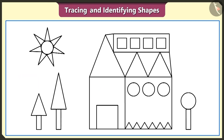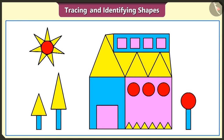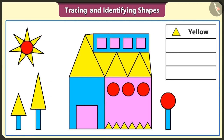Let's fill this figure with colors. First of all, we will fill all the triangles with yellow color. Now we will fill in all the circles with red color. There are several square shapes in this figure — we will fill in the square shapes with pink color. The rectangle shape still needs to be filled. Now we will fill the rectangle shapes with sky blue color. So we have filled the triangles with yellow, the circles with red, the squares with pink and the rectangles with sky blue color.